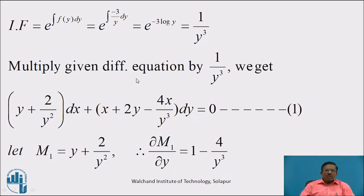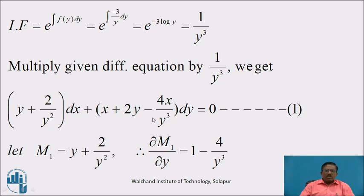Now, multiply the given differential equation by integrating factor 1/y³. We get (y + 2/y²)dx + (x + 2y - 4x/y³)dy = 0. Denote this equation by (1). This is in the form M dx + N dy = 0, but instead of M and N, I am using M1 and N1.